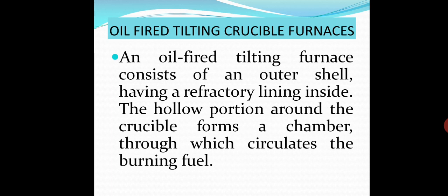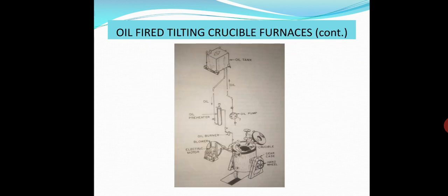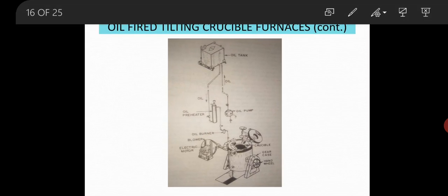An oil-fired tilting furnace consists of an outer shell having a refractory lining inside. The hollow portion around the crucible forms a chamber through which circulates the burning fuel. The gases finally escape into the open atmosphere. Air at a definite pressure is supplied from the blower, and the oil comes from the oil tank through the oil preheater. The oil tank is kept at sufficient height, and the oil is pumped into the tank. This is the diagram of oil-fired tilting crucible furnace.